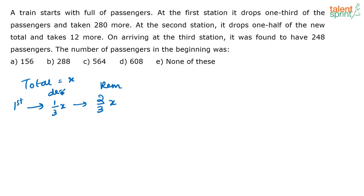He is dropping these people. Remaining is two by three x. Then what is he doing? He is taking 280 people more. So now the number of people in the train is two by three x plus 280.